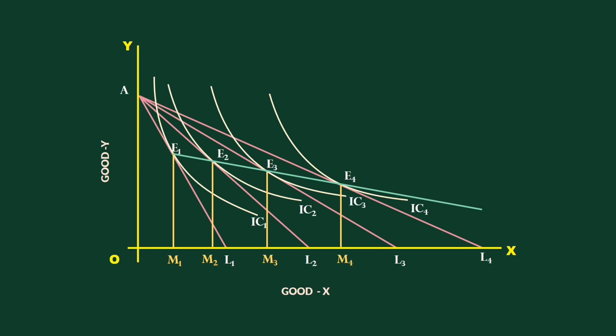Join the equilibrium points E1, E2, E3 and E4. What we get is the price consumption curve PCC. In the present case, the PCC is falling to the right. It means successive fall in the price of good X makes the consumer to consume more and more. The fall in the price of good X results in the increasing quantity of it to be purchased. Moreover, the downward sloping PCC signifies that good X is a normal one.